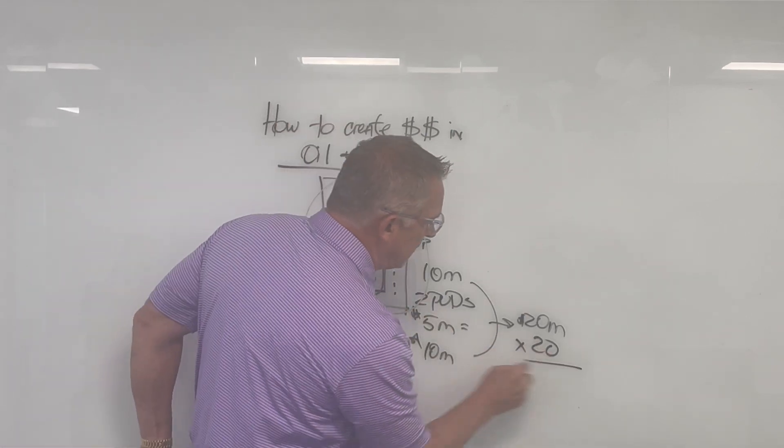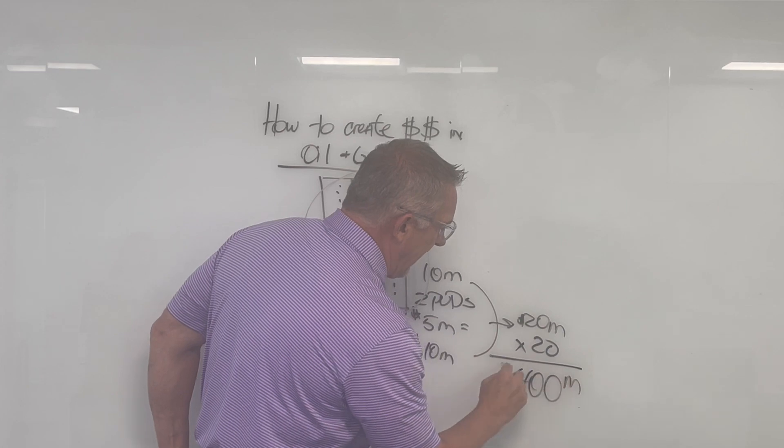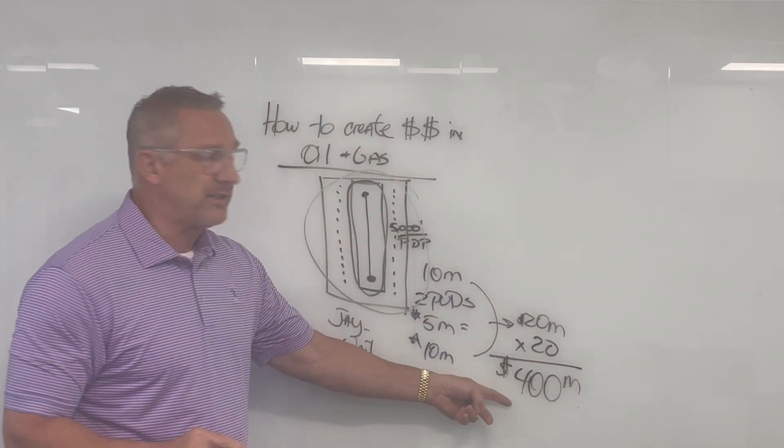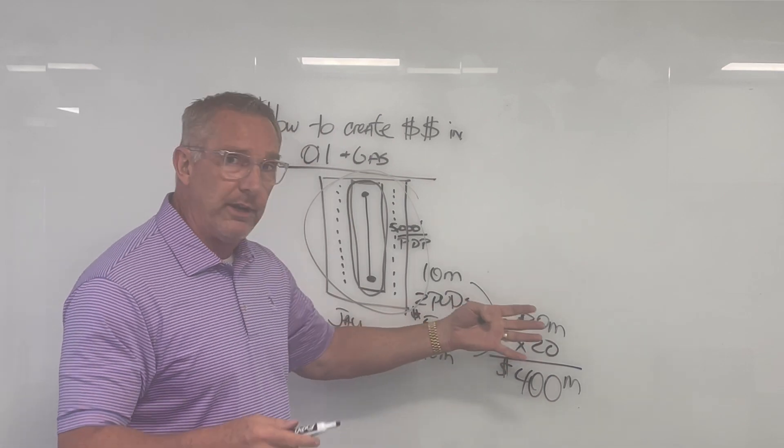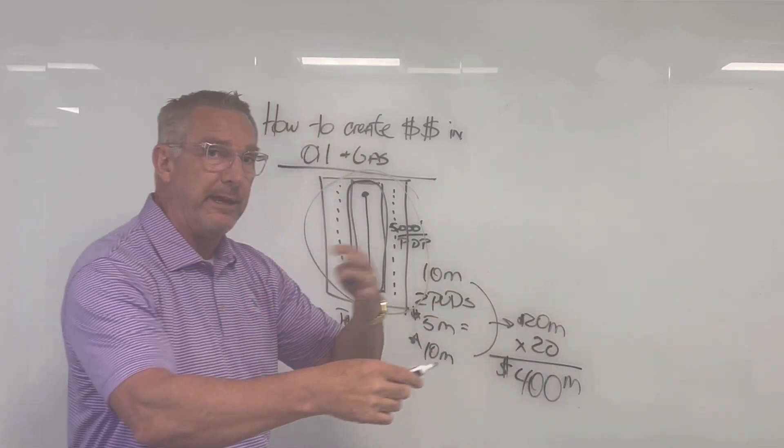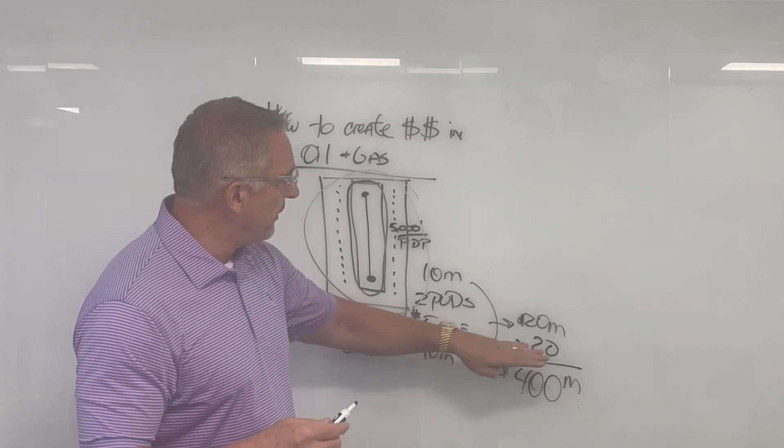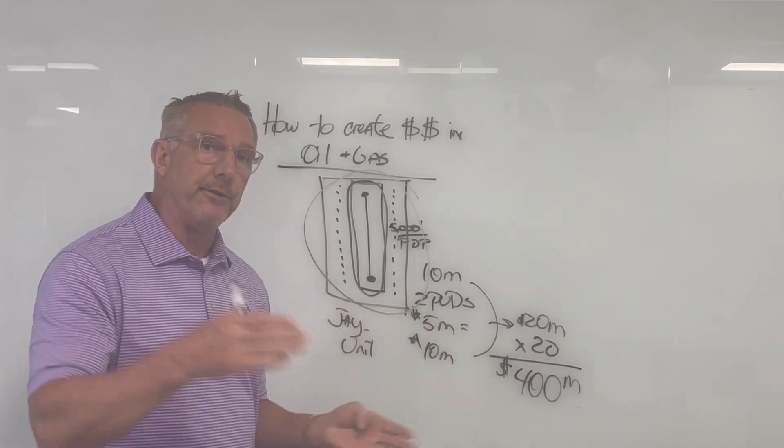But you put 20 of these together, now you're talking. Now you're talking some money out here. Now this is how you create money. 20 of these, 30, 40, 50, whatever the case may be, however fast you can drill these, and however you want the prices to go in your favor.